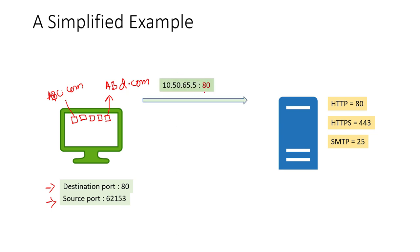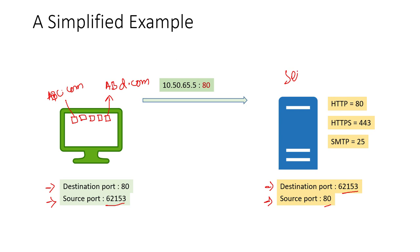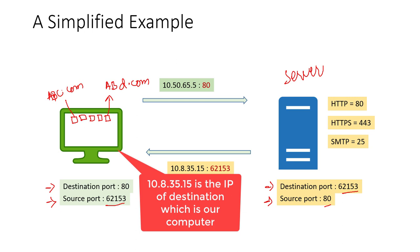The source port will tell the server where to forward the traffic — for abc.com and for abd.com. This is my source IP, and with the source IP I am sending the request to the server. The server will respond with a destination port. This destination port matches the source port from the client side. The source from the server side is port 80, because this server is giving you information from port 80. So the response from the server will come back with the port — for example, 62153 — and this is the IP of the destination.